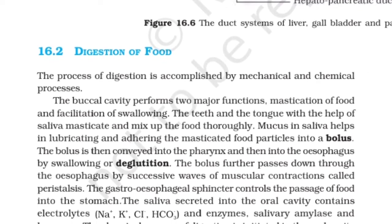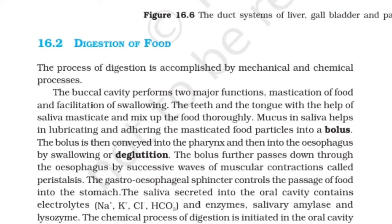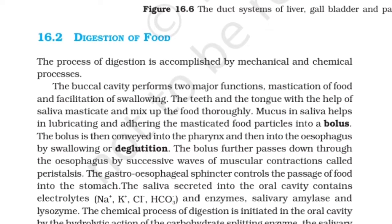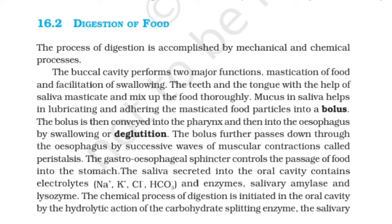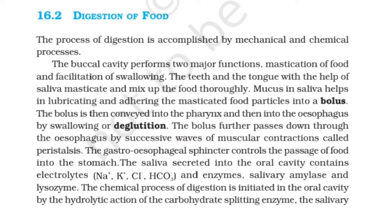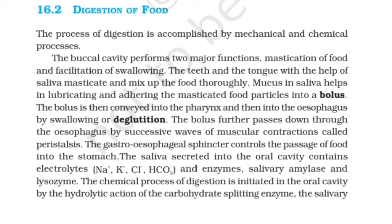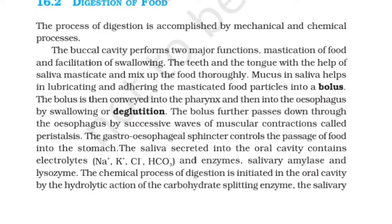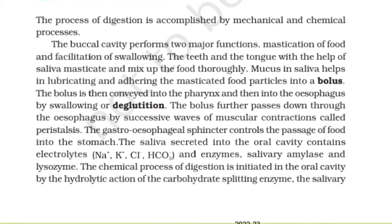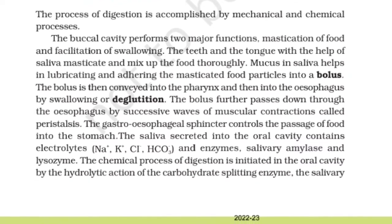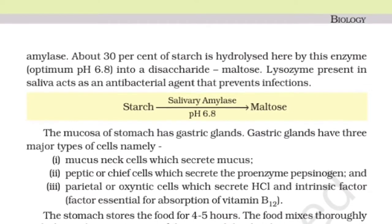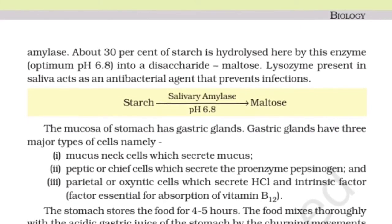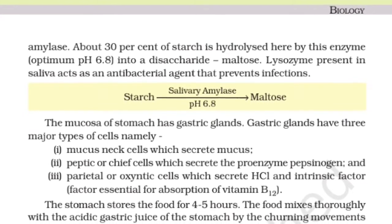The bolus further passes through the esophagus by successive waves of muscular contractions called peristalsis. The saliva secreted into the oral cavity contains electrolytes and enzymes — salivary amylase and lysozyme. The chemical process of digestion is initiated in the oral cavity by the hydrolytic action of the carbohydrate-splitting enzyme salivary amylase. About 30% of starch is hydrolyzed here by this enzyme at optimum pH 6.8 into a disaccharide, maltose.